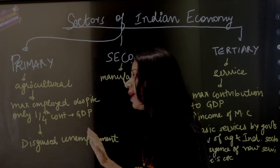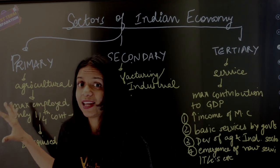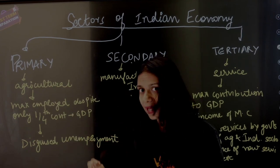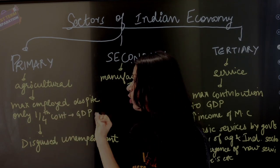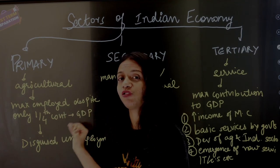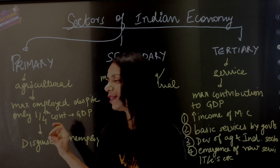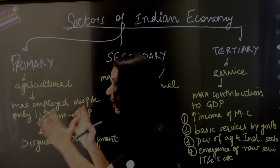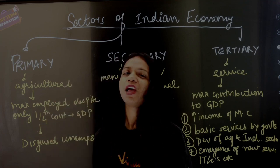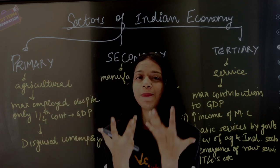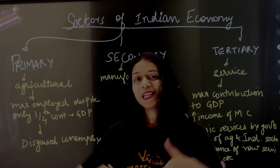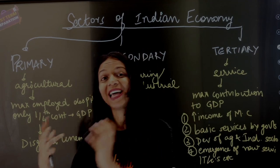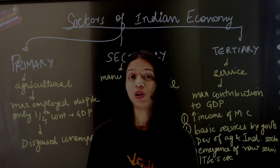However, in India, the primary sector also contributes more to employment, despite the fact that it only contributes one-fourth to GDP. The reason for that is hidden unemployment or underemployment, where there are more people in the agricultural sector than is actually required, and so the quantity produced does not increase.